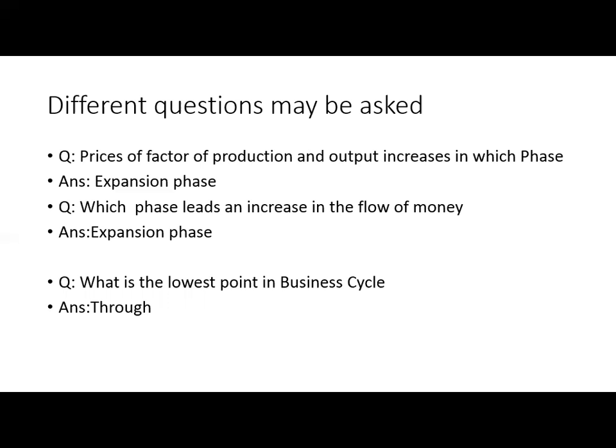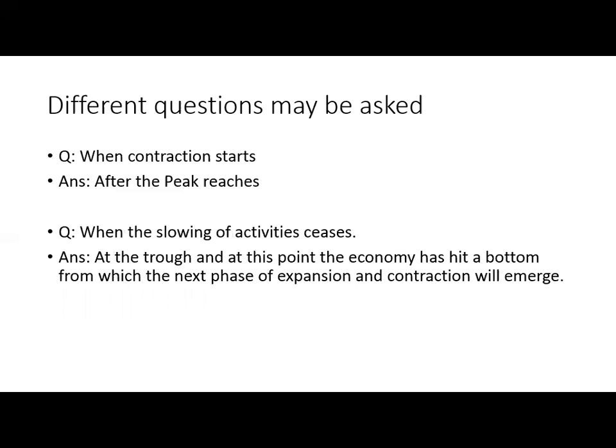Which phase leads to an increase in the flow of money? Where there is an abundant flow of money and everybody expects the market to go up and things will move in the right direction — that is also the expansion phase. The lowest point in the business cycle is the trough. After the peak is reached, you have to come down; that is contraction. When the slowing of activity ceases, the economy has hit a bottom from which the next phase of expansion and contraction will emerge.